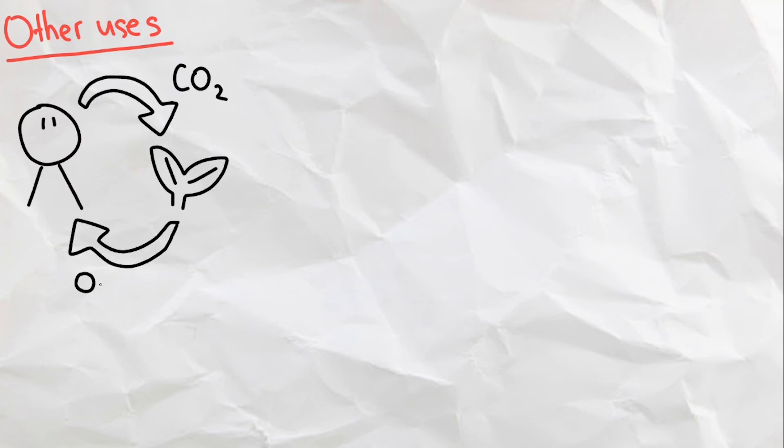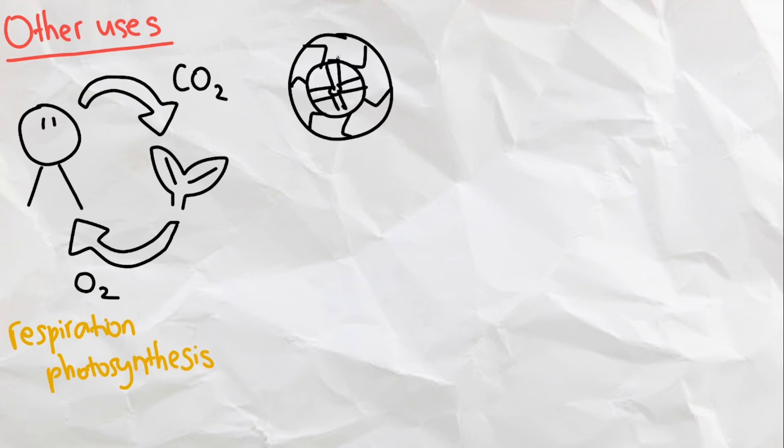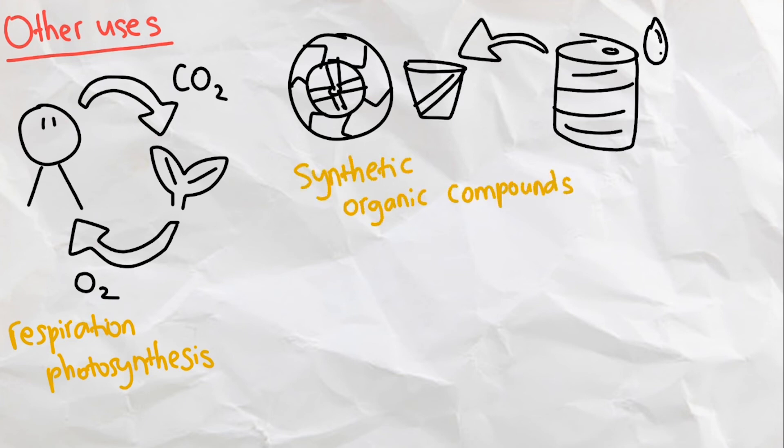So what about other uses of carbon? Carbon is essential when it comes to respiration and photosynthesis. As oxygen and carbon dioxide are being exchanged, some materials such as plastic and rubber also contain carbon. But they are considered synthetic organic compounds because those materials are derived from petroleum.